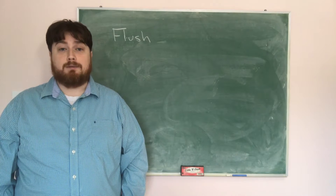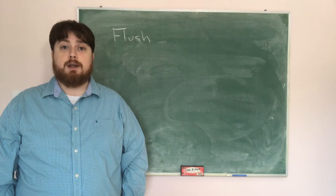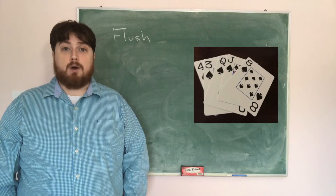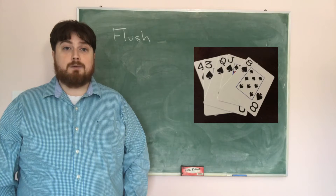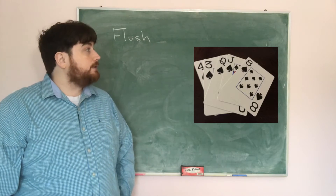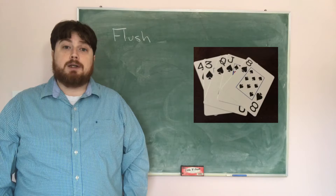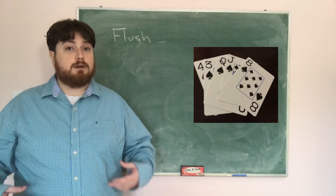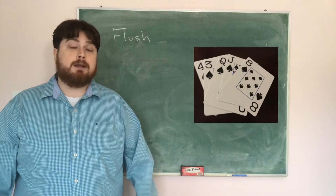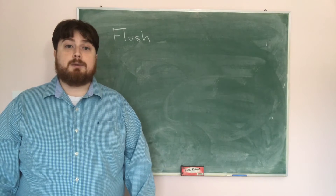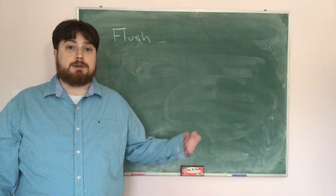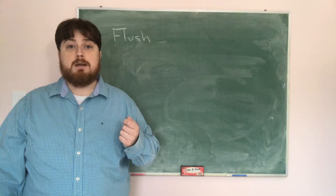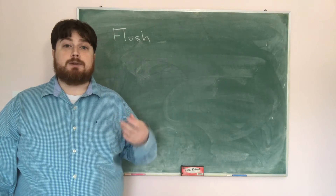Now we want to count the number of flushes that are possible. A flush is a hand where I have five cards all of the same suit — the numbers don't matter, just the suit. For example, I could have five cards that are all hearts, all diamonds, all clubs, or all spades. We want to count how many outcomes result in a flush.